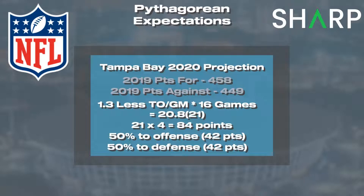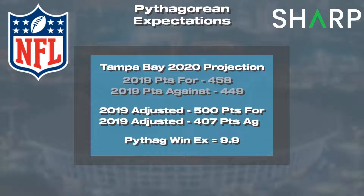Fast forward to 2020, Tom Brady joins this team. Brady in 2019 threw 0.6 interceptions per game — a difference of 1.3 interceptions per game from Winston. In the NFL, each turnover is worth about four points. So if Brady could come in and throw just 0.6 interceptions per game, we can expect on a per game basis this team to be 1.3 times four points better, equating to 5.2 points per game. Some of those points show up on defense, some on offense. Let's allocate two points to offense and two to defense per differential in turnovers. That gives 21 fewer interceptions, translating to 42 more additional points scored and 42 fewer points given up — 500 total points scored and 407 points given up. In a 16-game season, that equates to 9.9 wins and 6.1 losses on the Pythag formula.